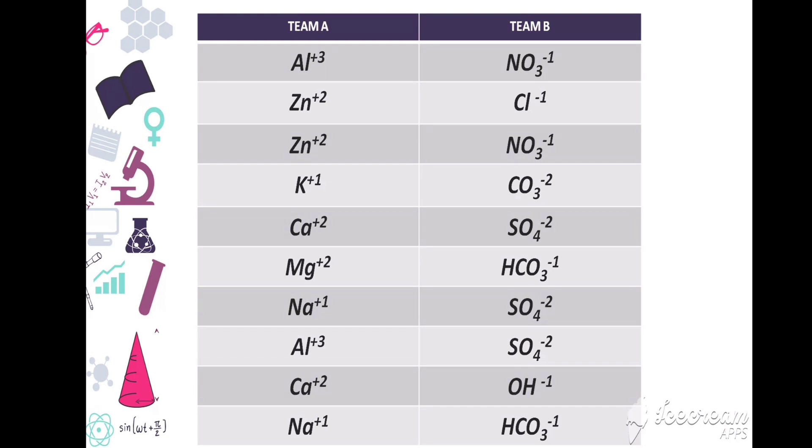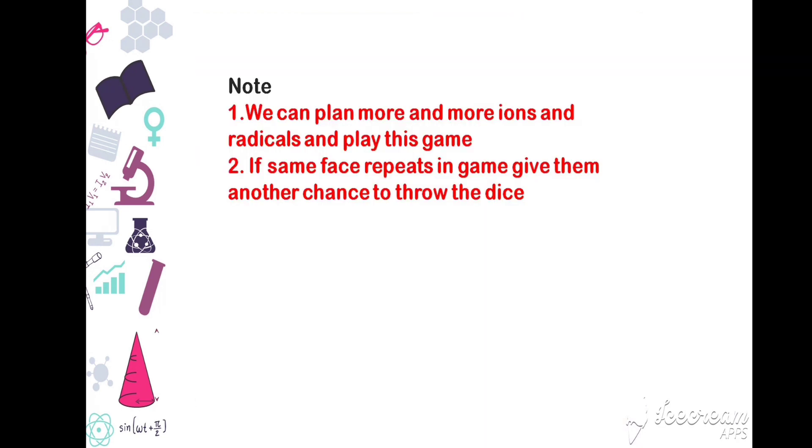After completing 10 rounds, the cations and anions are noted by both teams. And they are given 10 minutes time. They have to write the formula as well as the name of the compound.